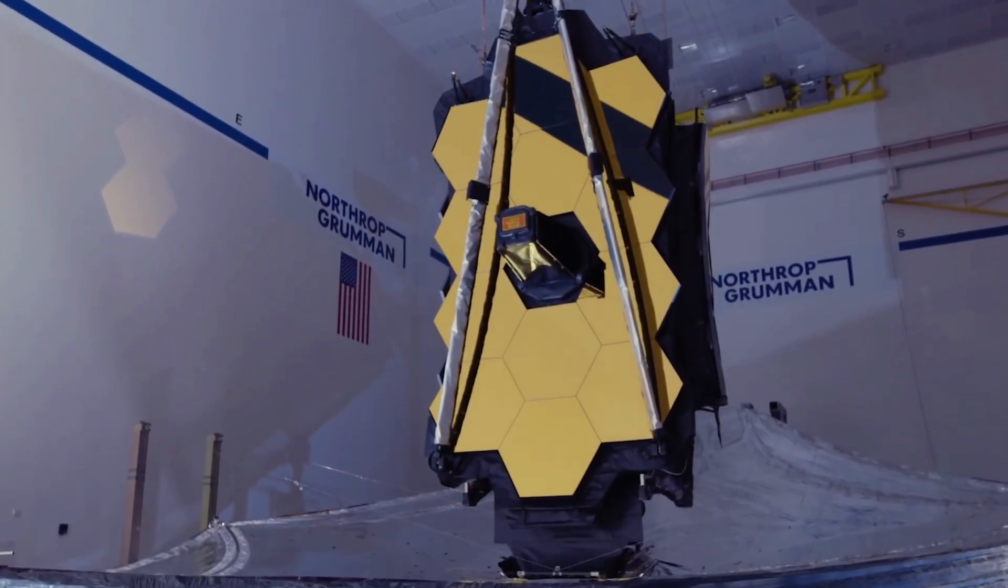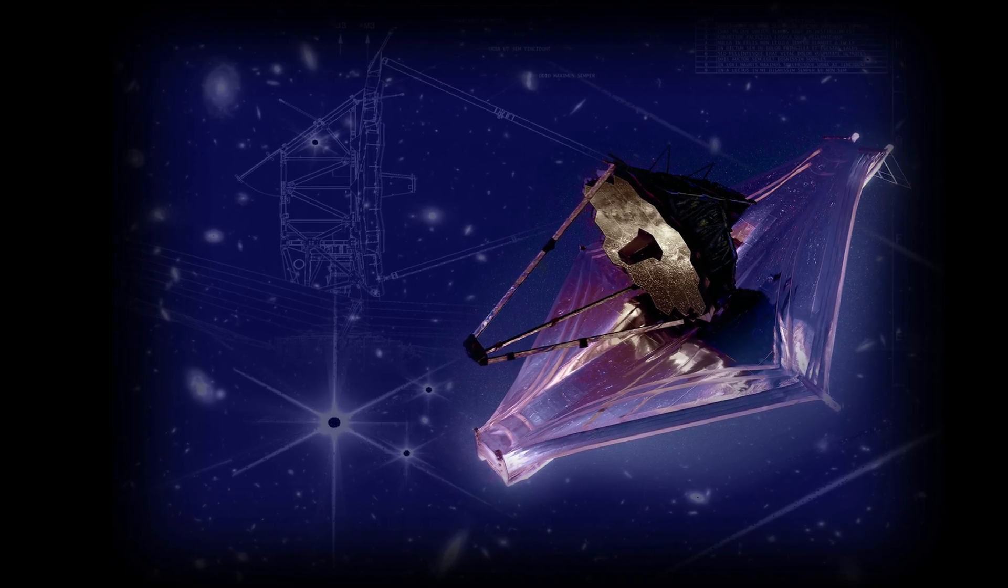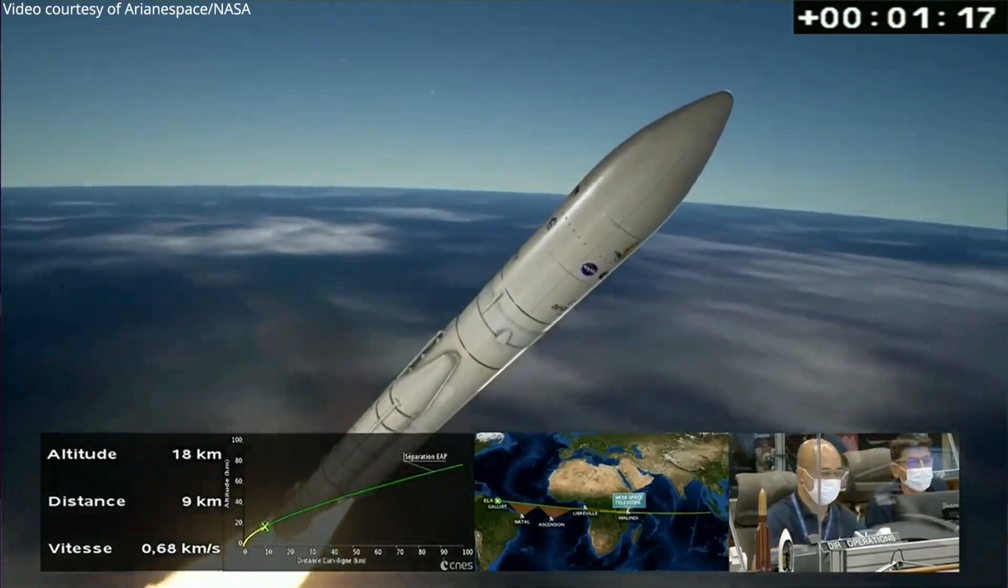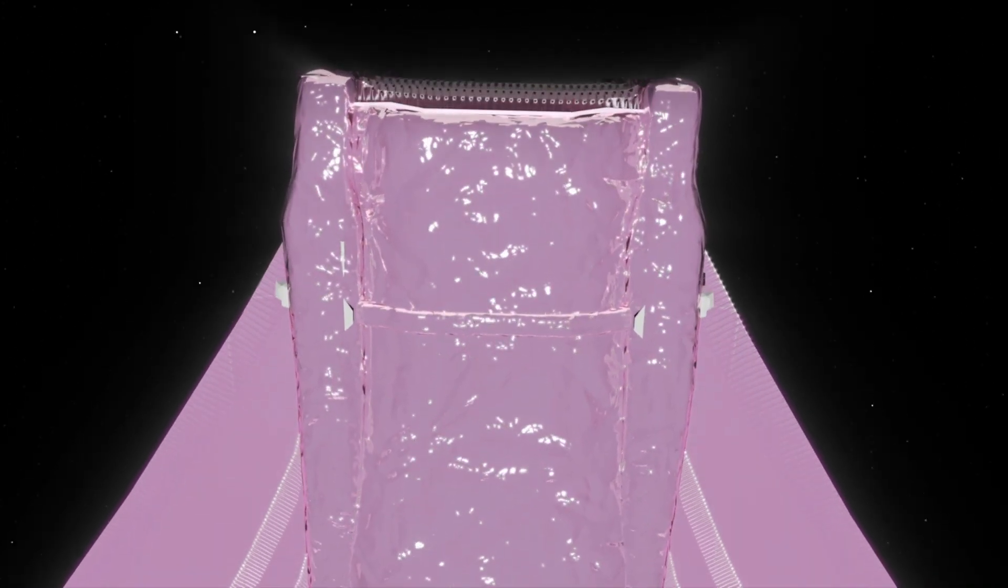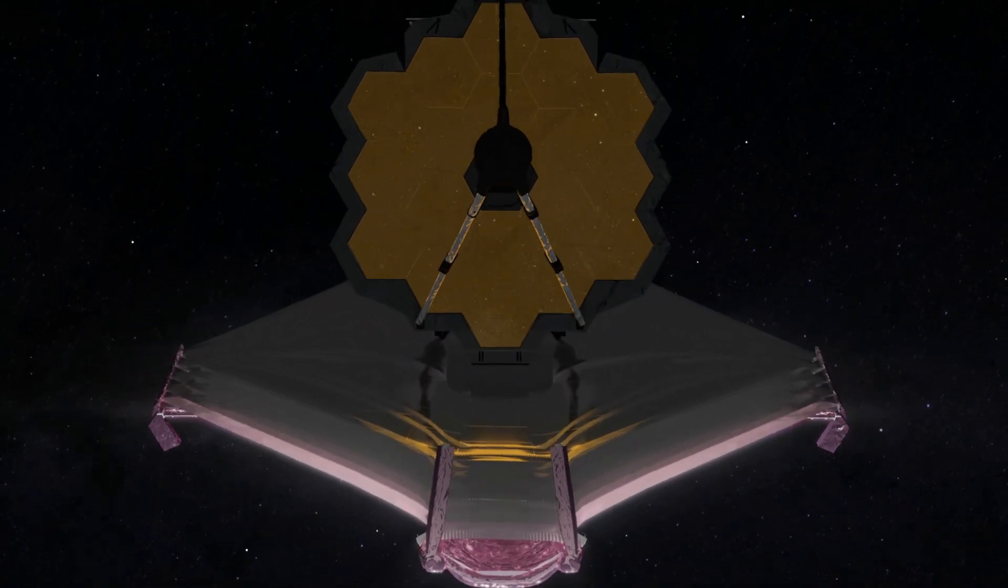But how long will James Webb be with us? The JWST was expected to operate for 5-10 years after its launch. However, thanks to a successful and precise launch, NASA announced that the JWST should have enough fuel to more than double its minimum mission life expectancy of 10 years.